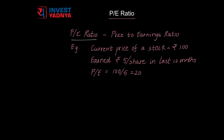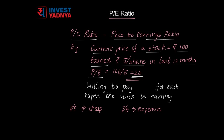P.E. Ratio is nothing but Price to Earnings Ratio. For example, if the current price of a stock is Rs.100 and this stock has earned Rs.5 per share in the last 12 months for its shareholders, the P.E. Ratio works out to be 20. What does this 20 imply? It implies that to own this particular stock, we are willing to pay Rs.20 for each rupee the stock is earning.